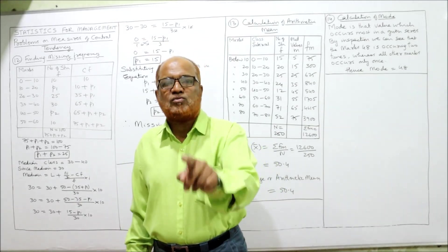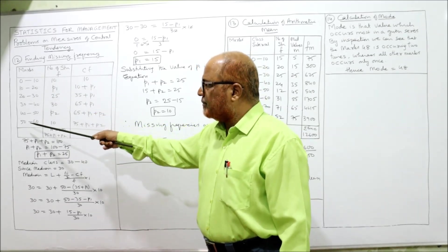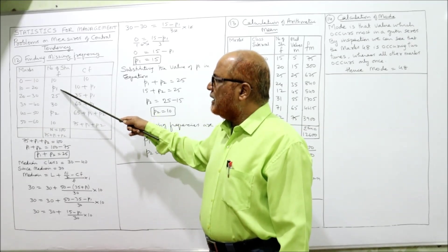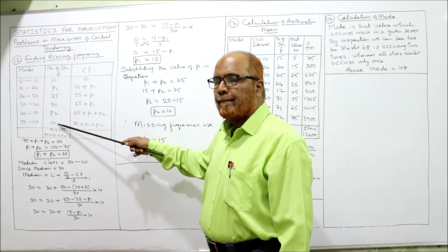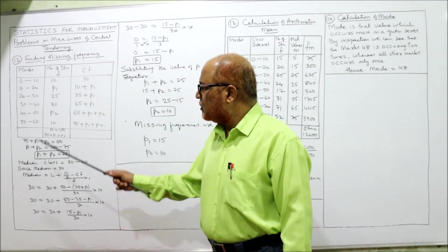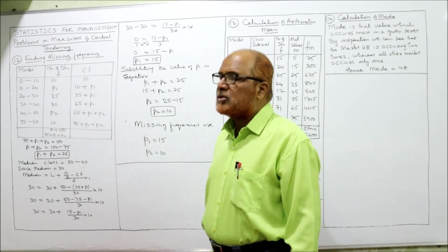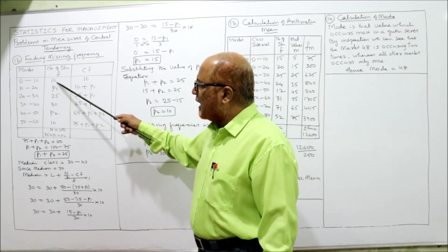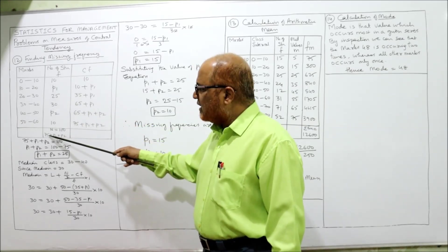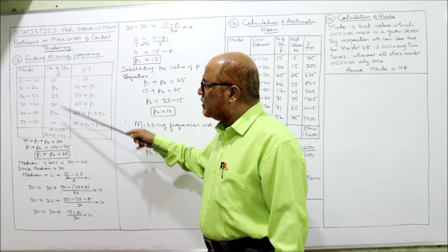We suppose the missing frequencies as p1 and p2. The frequencies are: 10, p1, 25, 30, p2, 10. The total frequency n is given as 100. Adding the known frequencies: 10 + 25 + 30 + 10 = 75. So 75 + p1 + p2 equals the total.